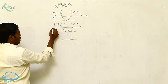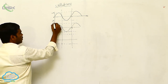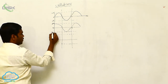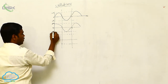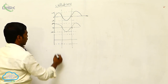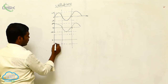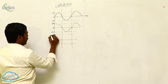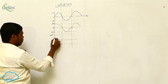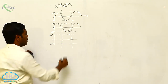Next, this is the velocity graph. This is one complete time period. At the mean position the velocity is zero, and at the extreme position the maximum velocity is plus a·omega and the maximum velocity is minus a·omega on the negative side. The acceleration is plus a·omega squared on the positive side and minus a·omega squared on the negative side.